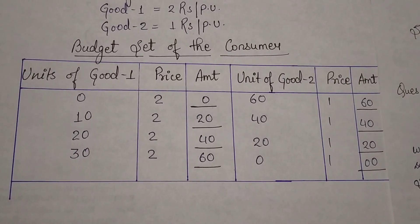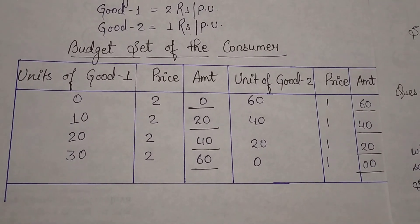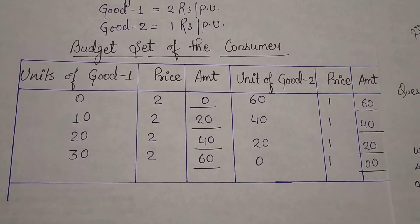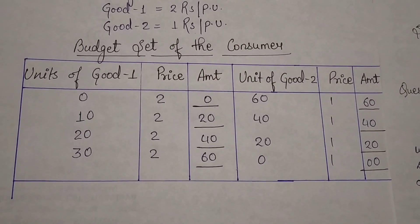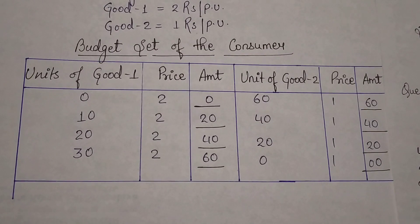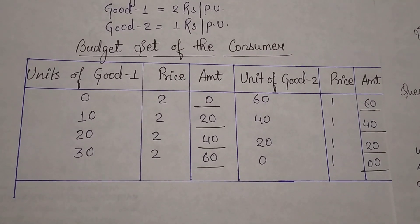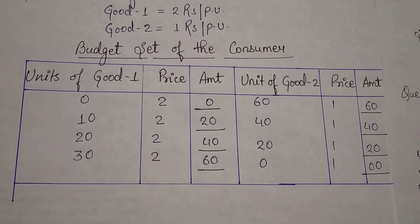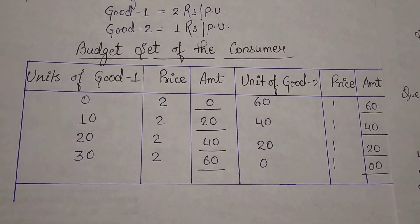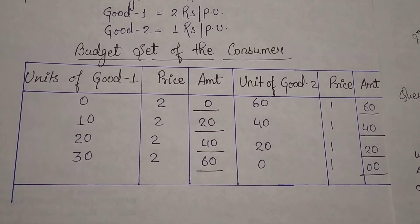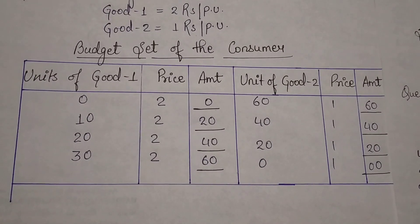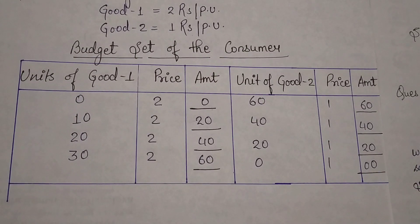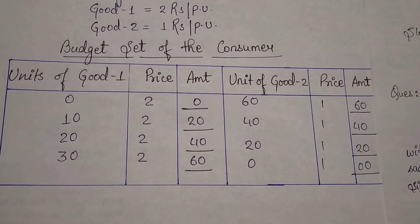In case of budget, we can spend the complete 60 rupees on good one or good two alone - meaning another commodity's consumption can be zero. It is not compulsive that we have to consume some amount of both commodities.